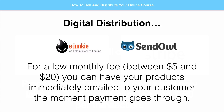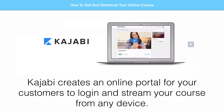My favorite platform for digital distribution — and I've used both of those in the past — is Kajabi. I've talked about it before and I'll probably continue to talk about it because it's just amazing. It's more expensive — it's going to run you at least $100 a month for the lowest package — but it does so much more than just distribute your products. It might be overkill to get started, but if you're really going to do a lot of online courses, it's going to be great because it gives you an online portal for your customers.